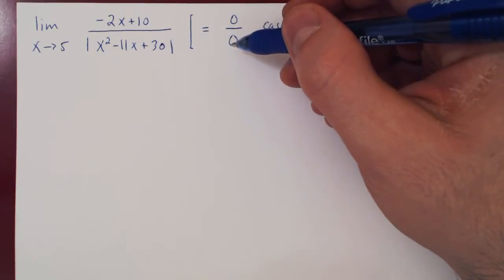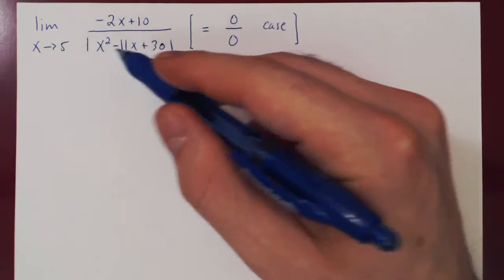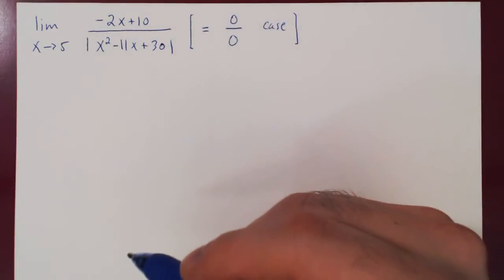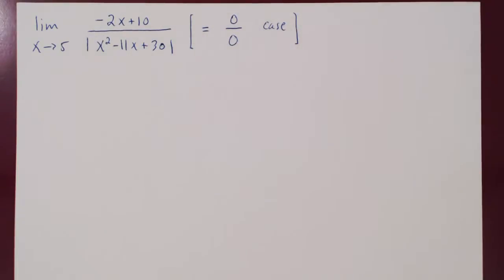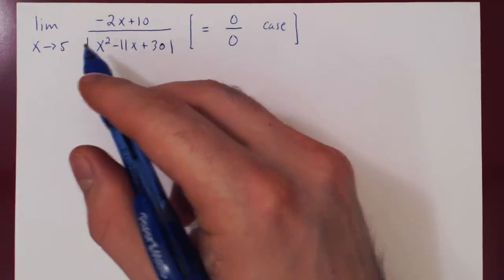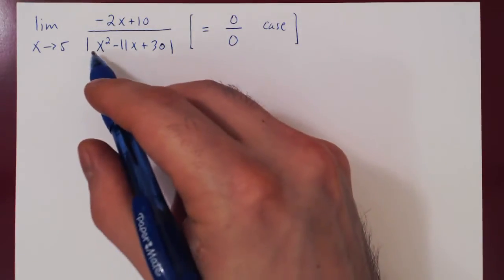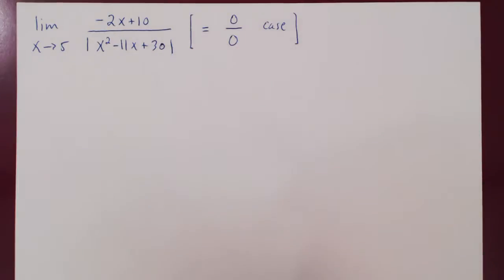The question is: how do we handle the absolute value here? The idea is very simply to drop the absolute value — but to do so, we need to know if the argument inside is positive or negative. To figure this out, we look at the limit from the left and the limit from the right.